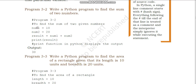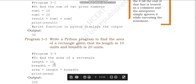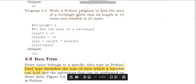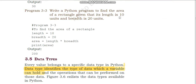The variables used here are num1, num2, and result. Now let's learn another program: write a Python program to find the area of a rectangle given that its length is 10 units and breadth is 20 units. So length — 10 is assigned to the variable length, 20 is assigned to variable breadth. Area equals length into breadth. Print area.